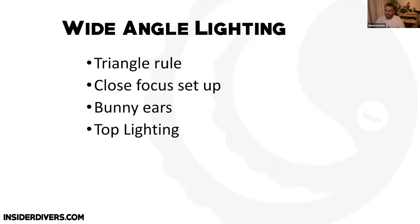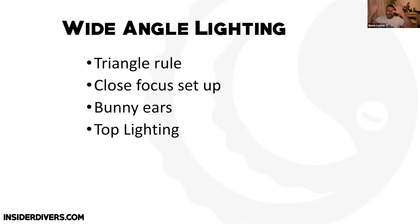These are a couple of tips for wide-angle lighting. Keep the triangle rule in mind — it's super important in wide-angle. Think about close-focus wide-angle: when you're close, bring in the strobes. Play with bunny ears — lots of people just shoot forward all the time. Start practicing bringing those strobes up above the camera to create more interesting effects.